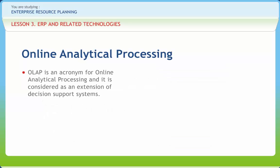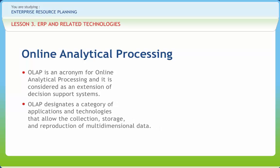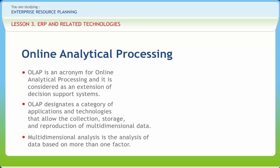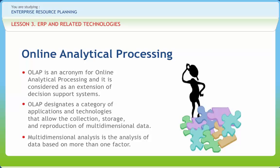OLAP is an acronym for online analytical processing and it is considered as an extension of the decision support systems. OLAP designates a category of applications and technologies that allow the collection, storage and reproduction of multi-dimensional data. Multidimensional analysis is the analysis of data based on more than one factor. The two basic components of OLAP are dimensions and measures. The dimensions included in the analysis are time, location, product and customers. Measures are the quantitative representation of dimensions. OLAP is useful to managers, analysts and executives. It supports multi-dimensional data analysis and makes data access easier and faster. The system delivers responses to users within 5 seconds, with the simplest analysis taking 1 second and very few taking more than 20 seconds.